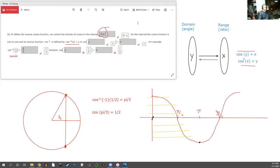These two things just tell us the opposite sort of direction of things. This one half is a ratio, this pi over three is an angle.